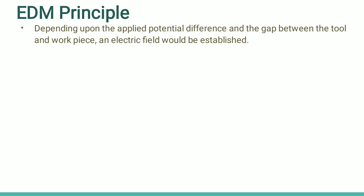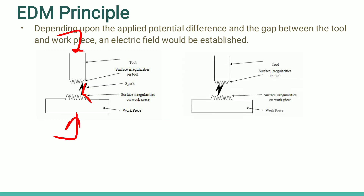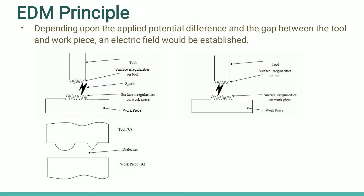Depending on the potential difference and the gap, an electric field is established. After the electric field is established, free electrons move from the tool toward the workpiece and positive ions move in the opposite direction. The spark always moves toward wherever the minimum gap will be. For example, the tool is the cathode and the workpiece is the anode; the dielectric fluid is used in between them.